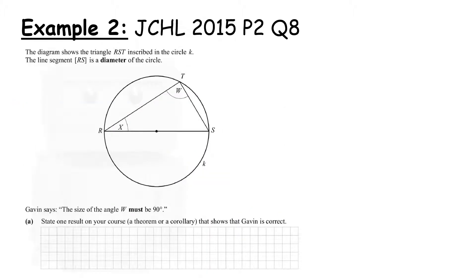Let's take another example. The diagram shows the triangle RST inscribed in the circle K. That means drawn within the circle K. The line segment RS is the diameter of the circle. Gavin says the size of W must be 90 degrees. State one result in your course, a theorem or corollary that shows that Gavin is correct. That is Corollary 2. It's the idea that when we have a triangle drawn in a semicircle, it must be a right-angle triangle, and that is leading from the circle theorem which states that the angle at the center of the circle is twice the angle at the circle. So if this is 180 degrees, then this in turn must be 90 degrees.